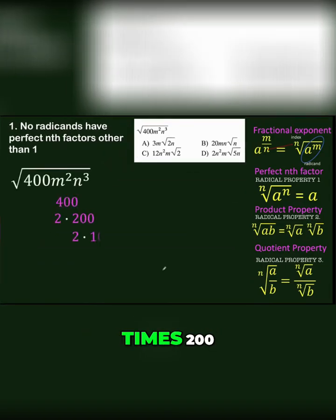400 is 2×200, 200 is 2×100, 100 is 2×50, 50 is 2×25, and 25 is 5×5.